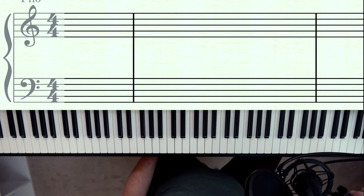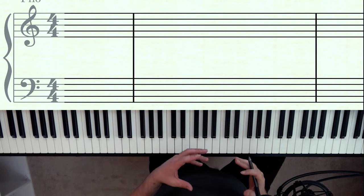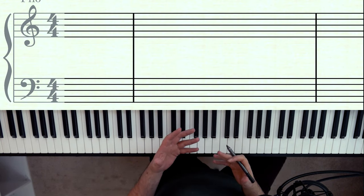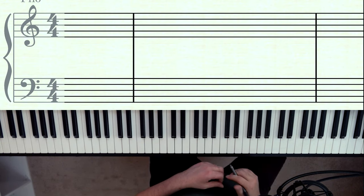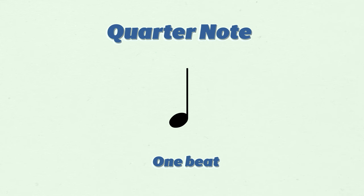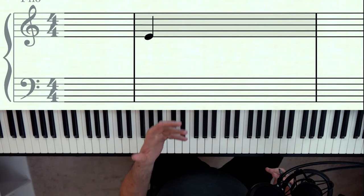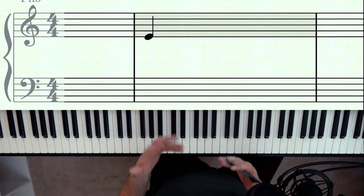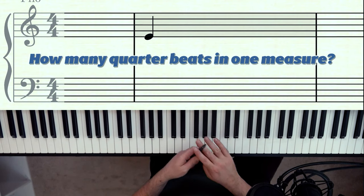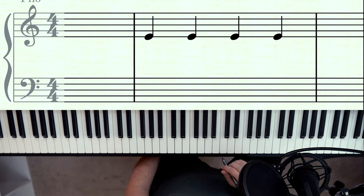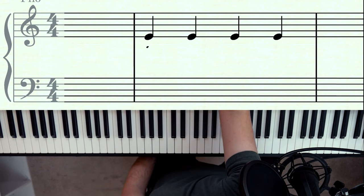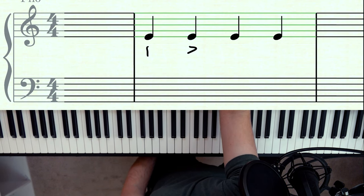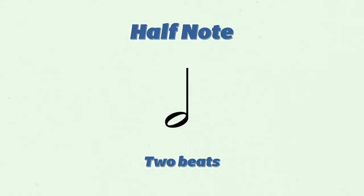Now let's talk about the different types of notes and how we can fit them into these boxes or measures. The first note is a quarter note, and this gets one beat. You can have four of them in a measure of four-four, and the beats would be counted one, two, three, four.